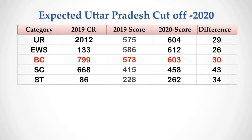We have taken last year's Uttar Pradesh state cutoff for government colleges and calculated the NEET 2020 score for the last year rank. We have taken the community rank cutoff, and when we see this year's NEET score for the same category rank, we can see an increase of 29 marks for the unreserved category.